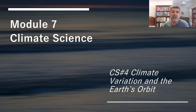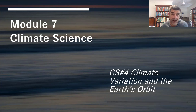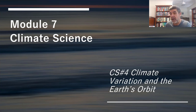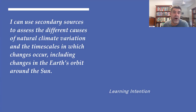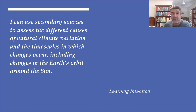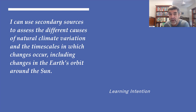Hi students, welcome to HSC Earth and Environmental Science and Module 7 on Climate Science. This is video number 4, and this time we're going to continue our look at natural greenhouse cycles by looking at climate variation in the Earth's orbit, focusing on the changes in the Earth's orbit around the Sun.